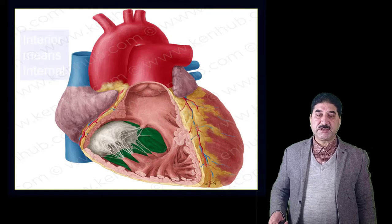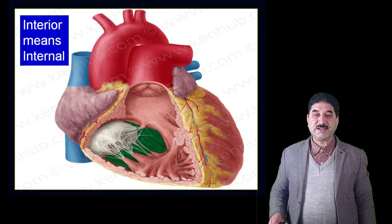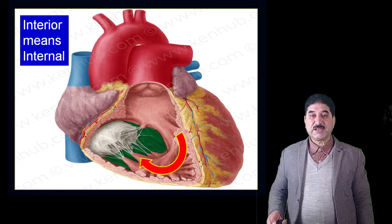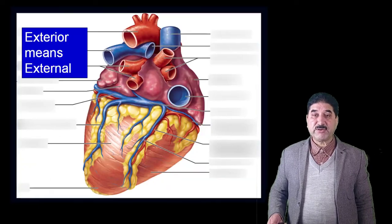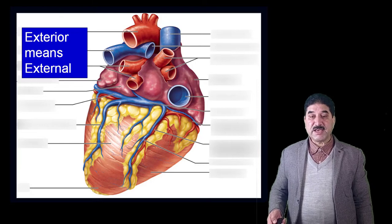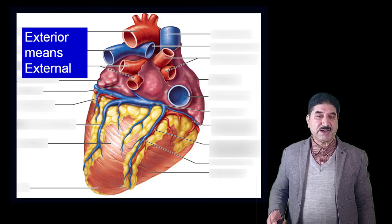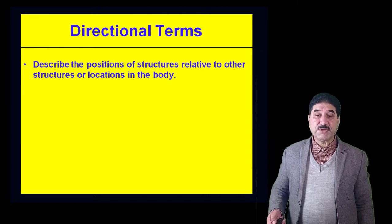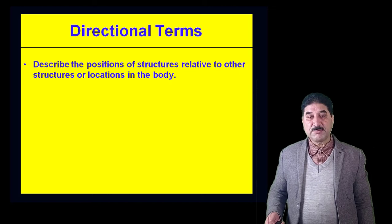Now let us describe these anatomical terms. Interior means inside or internal — for example, the interior of the heart such as the interior of the right ventricle. Exterior means outside or on the surface — for example, on the exterior surface of the heart. As shown in the diagram, the veins and arteries of the heart are located on the exterior surface of the heart.